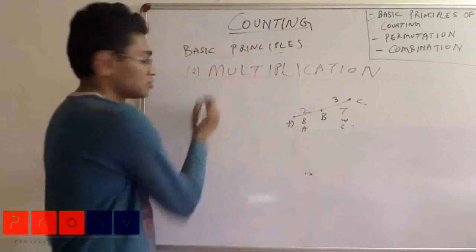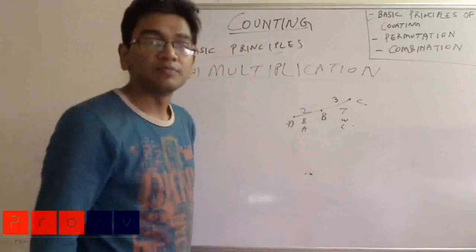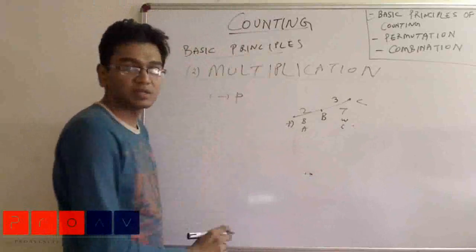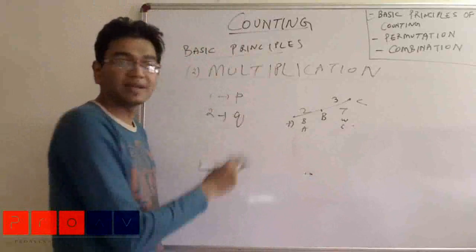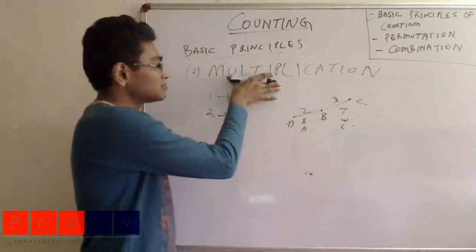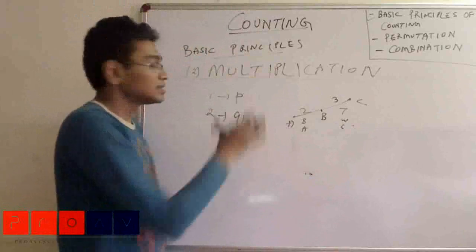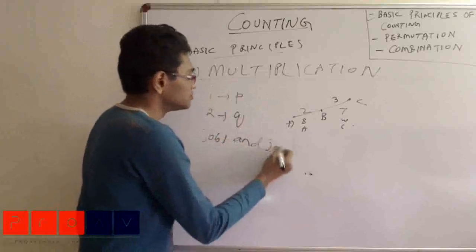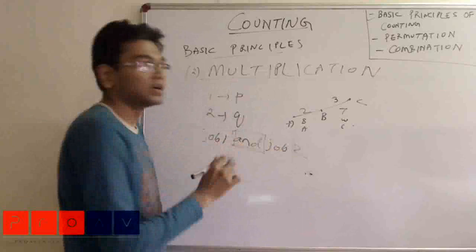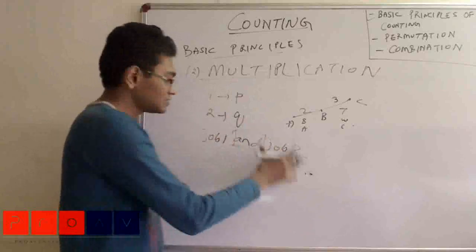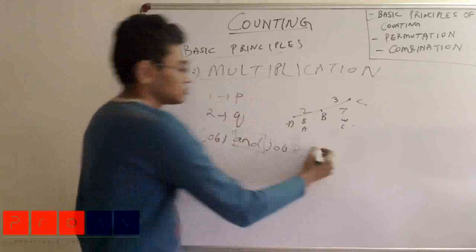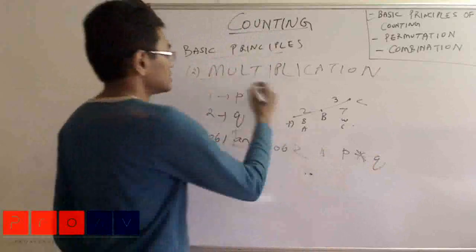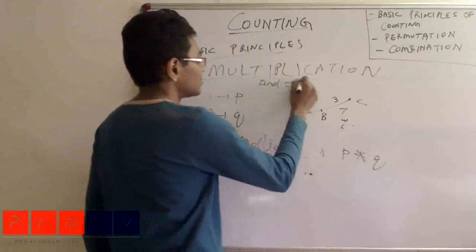Now let us see the basic principle of multiplication. The statement is: if one job can be done in p number of ways and a second job can independently be done in q number of ways, then the basic principle of multiplication says the number of ways in which job one AND job two can both be done is p multiplied by q. The word 'and' gets transformed into multiplication.